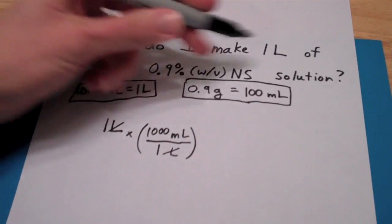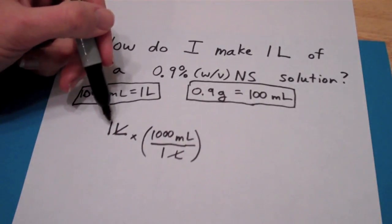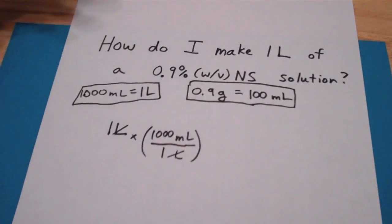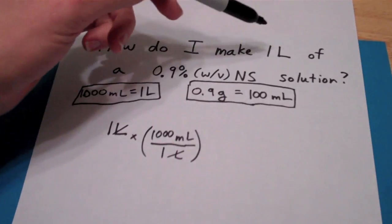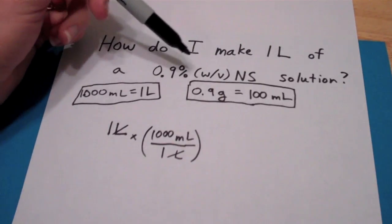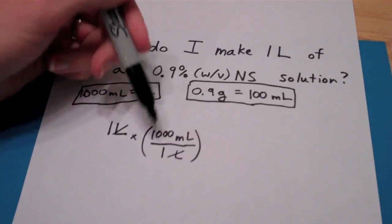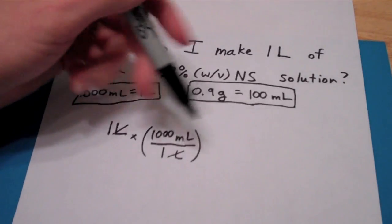Because if this had been a different number, like if I made 5 liters, we would have put the 5 here times 1,000, then we would have gotten 5,000 milliliters. But this problem is pretty easy. If I make 1 liter of solution, that's really 1 times 1,000, 1,000 milliliters.